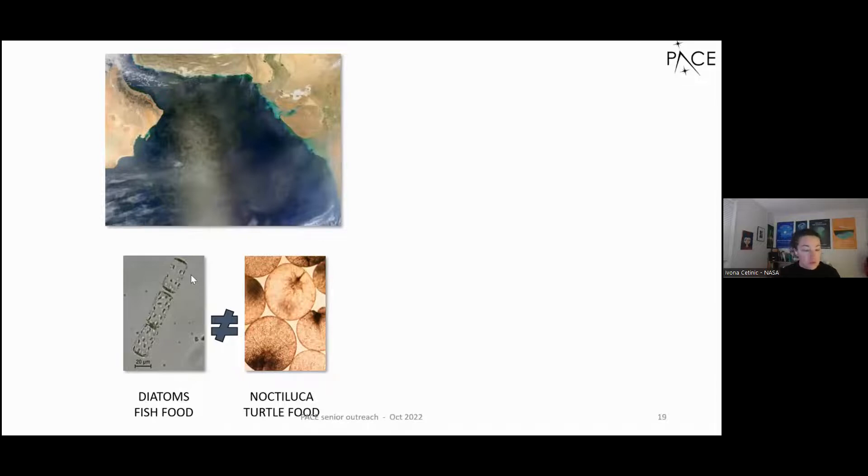So it would be really great for us to be able to tell the local communities in that area, look, there's lots of diatoms. It's going to be supporting fisheries for years to come. Or, oh, look, it's a noctiluca bloom. Therefore, you should tell the local fishermen not to go fish until this passes, because it's going to mess up their nets, and they're going to have to clean it, and they're not going to be able to fish anything.